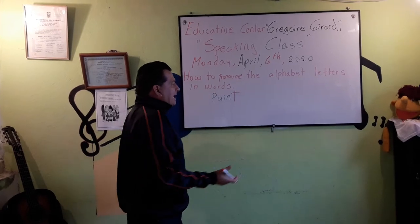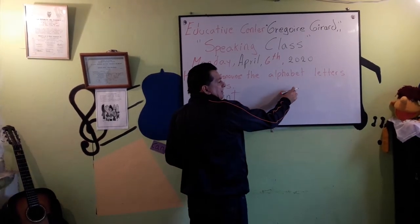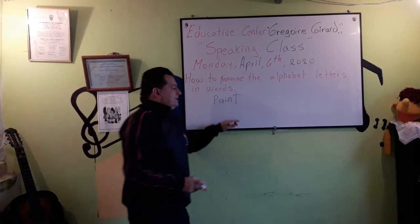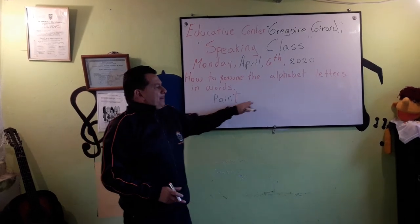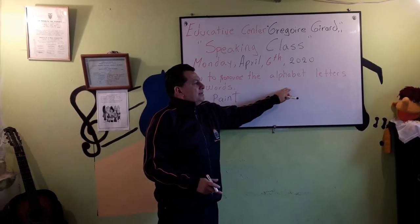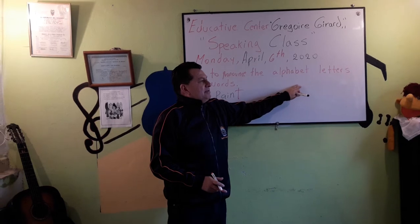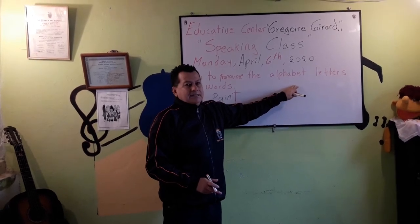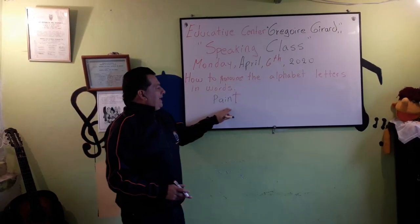Because in the alphabet, when you check the alphabet song, T is pronounced "T." Paint. So in the alphabet you go A, B, C, D, E, F, G, H, I... T. So: paint.